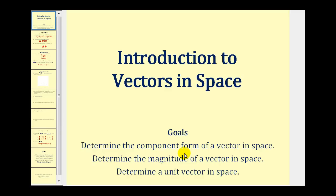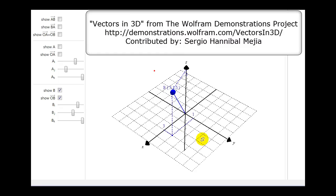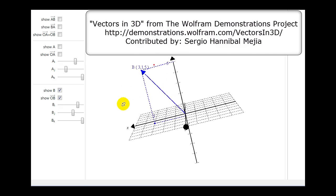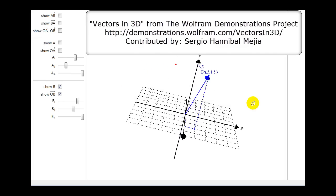A good place to start is to take a look at the graph of a vector in 3D. Here we have the XYZ coordinate system, and in blue we have the graph of a vector where its initial point is at the origin (0, 0, 0) and the terminal point is at (3, 1, 5). Rotating the coordinate system gives a better idea of the location of this blue vector. This is an example of a vector in space.